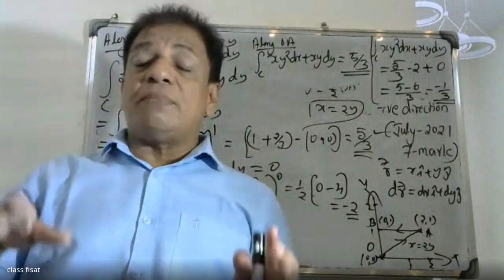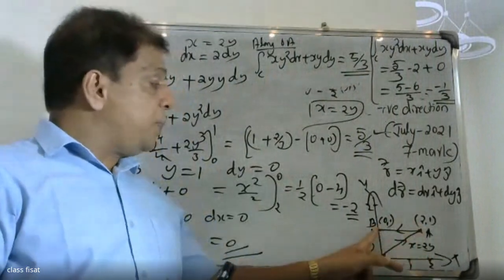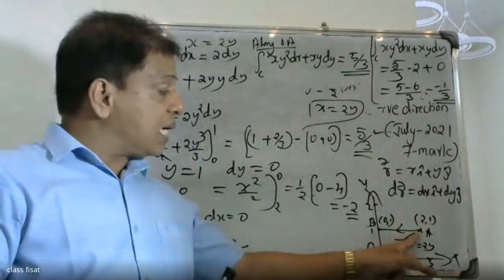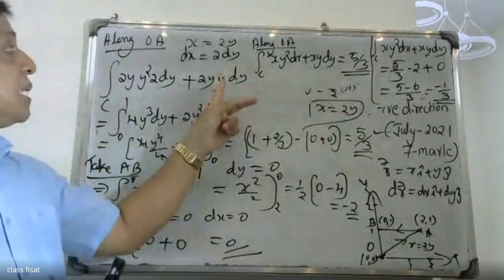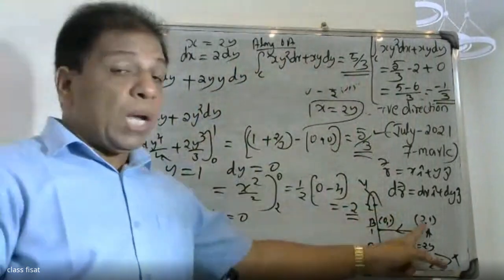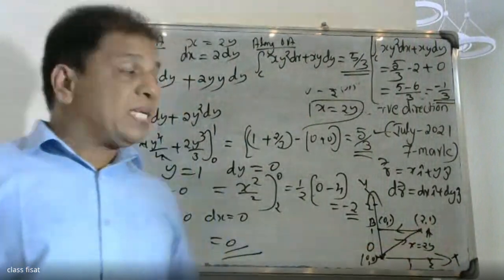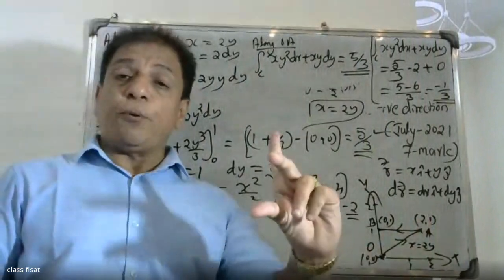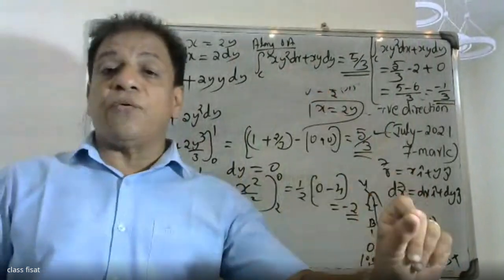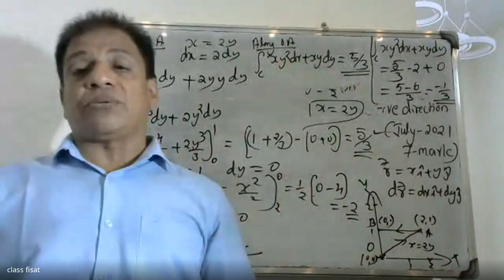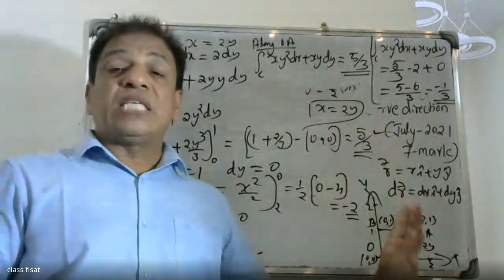Along the triangle, we go through three points: O is (0,0), A is (2,1), B is (0,1). We will find the direction from O to A. The end point gives y minus y1 equals (y2 minus y1)/(x2 minus x1) times (x minus x1). Applying the formula, we get x equals 2y.